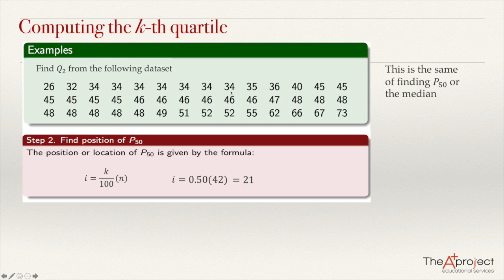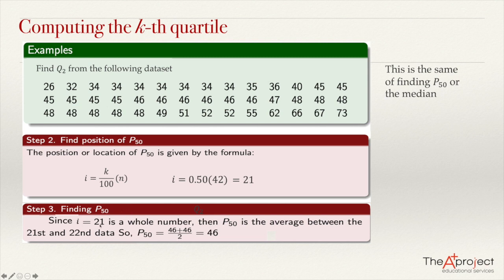Because this is a whole number, we need to get the data in position 21 — counting to position 21. Since we get a whole number, we get the data in position 21 plus the following data and take the average. In this case, both are 46, so the average is 46. Because the index was 21, percentile 50 or quartile 2 is the average of data at positions 21 and 22: 46 plus 46 divided by 2 equals 46. So that is quartile 2.